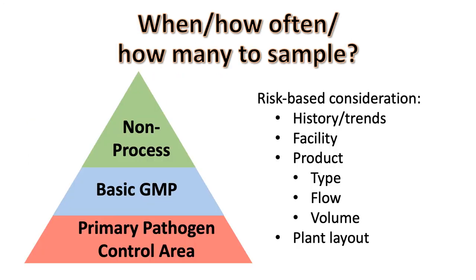The frequency that you collect samples for environmental monitoring will be based on several risk factors, including the history or trends for your environmental monitoring program, the facility, product, and plant layout. Because this is a pathogen environmental monitoring program, it makes sense that most of the samples will focus in the primary pathogen control area, with fewer samples in the basic GMP area and fewer still in the non-processing area. The pathogen environmental monitoring program will be unique for each facility and product.